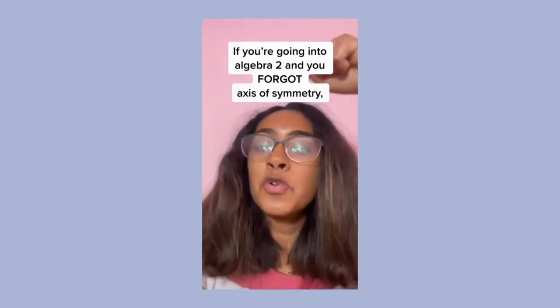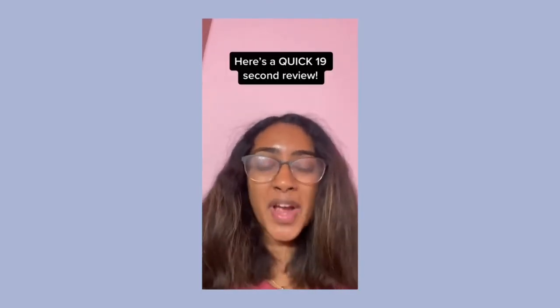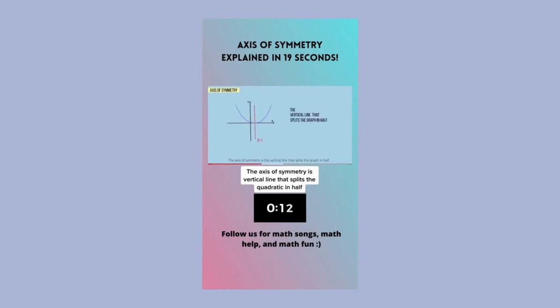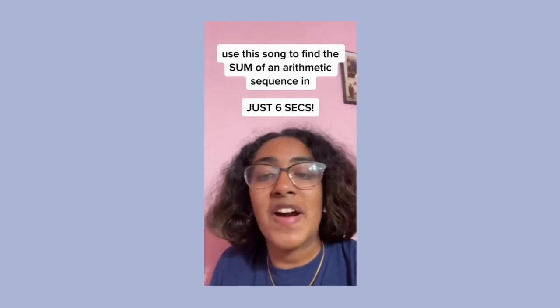If you're going into Algebra 2 and you forgot the axis of symmetry of a parabola, here's a quick 19-second review. The axis of symmetry is the vertical line that splits the graph in half. The axis of symmetry is written as x equals the x-coordinate of the vertex.